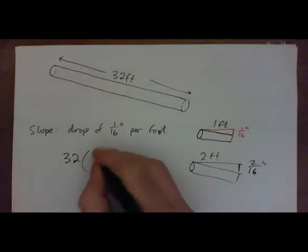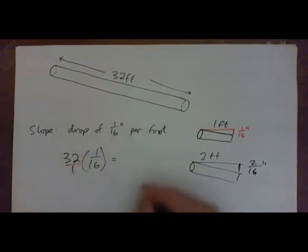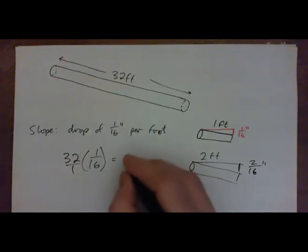So we go 32 times 1 over 16, and that's 32 over 1 times 1 over 16. And that works out to be 2.